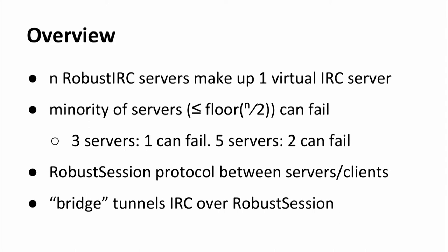Let's look at how this works. For the servers, we have a number of Robust IRC servers which make up one virtual IRC server. At any given point in time, the minority of these servers can fail. So if you have a network of three servers, one of them can fail. If you have five servers, two of them can fail, and so on.